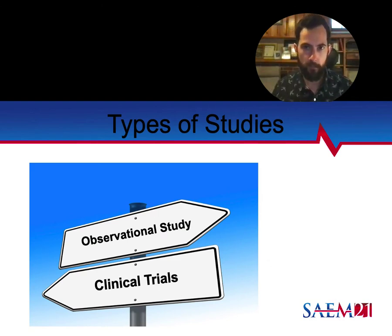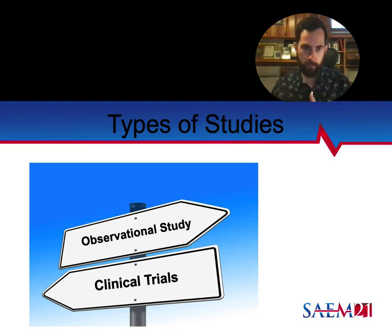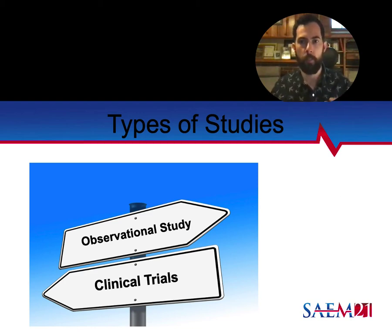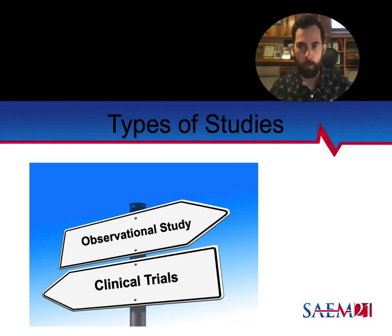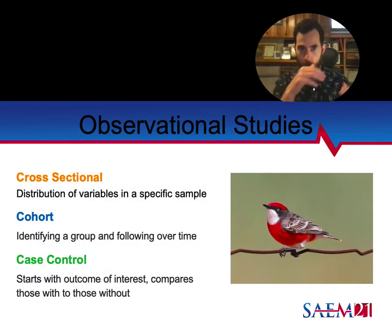When we talk about different types of studies, there's a big split right off the bat: observational versus clinical trials. Keep causality in mind throughout — we're trying to establish that something causes something and build evidence that it's true. Observational studies mean we're just watching something happen, collecting data, and trying to draw conclusions. This can occur prospectively or retrospectively. Interventional or clinical trials, on the other hand, mean we're actually doing something to someone and studying what happens.